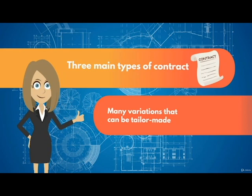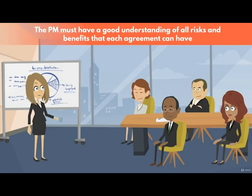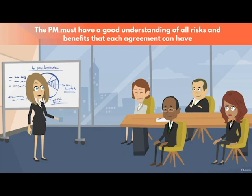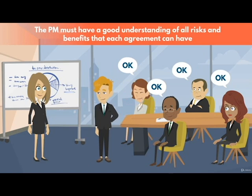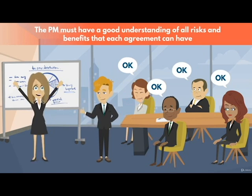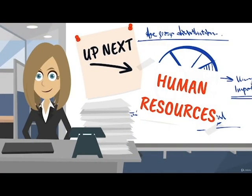The project manager must have a good understanding of all risks and benefits that each agreement can have, then define the most convenient approach for the project, the stakeholders, and of course for the vendor themselves to agree. So that's how the project manager can deal with the financial side of things. But what about the non-financial resources? Join us next lesson where we'll talk about human resources.